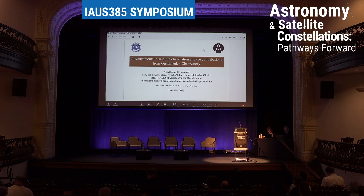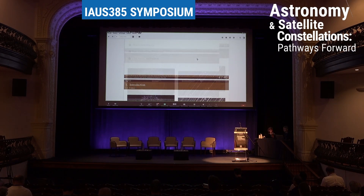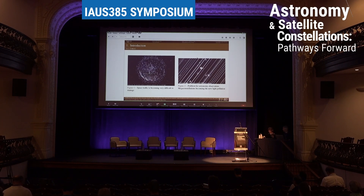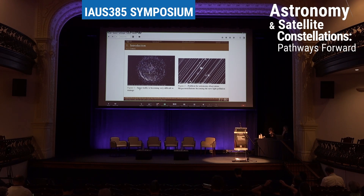As discussed in the previous presentation, our context is to address the problem of light pollution for astronomy observation, with the effect of mega-constellations becoming a growing concern. We will also talk about space traffic, which is becoming very difficult to manage because the number of satellites and debris in the sky is becoming significant.